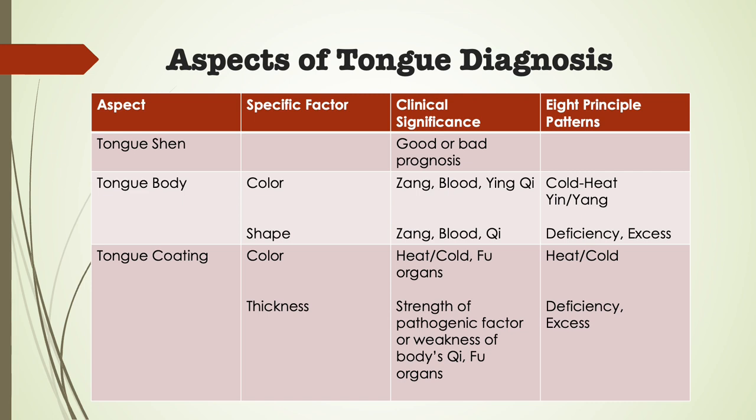The tongue color refers to the color of the tongue body itself and not the coating. If the coating is so thick that you cannot see the tongue body, the colors on the underside of the tongue may give an indication of the color of the tongue surface. The color of the tongue can be used to diagnose conditions of heat, cold, yin deficiency, yang deficiency, qi deficiency, and blood deficiency, as well as the state of the zangfu organs. The color of the tongue can give an idea of how deep a pathogenic factor has penetrated into the body.